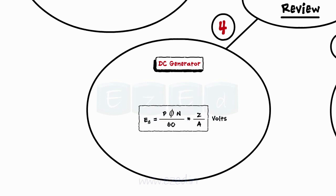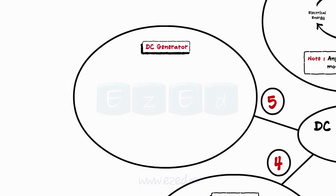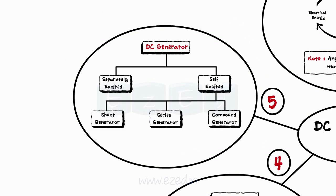Two main types of DC generators are separately excited generator and self-excited generator.